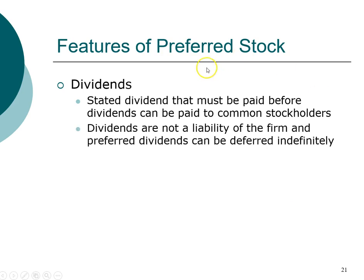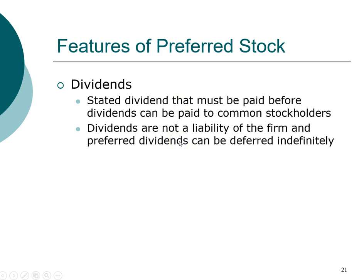However, because it is still a stock, it is not a liability of the firm, and dividends can be deferred if a company doesn't have cash. On the other hand, preferred stock has a lot of bond characteristics because preferred dividends are usually fixed. When doing homework for preferred stock, the amount of preferred dividend is often based on the par value of the preferred stock.